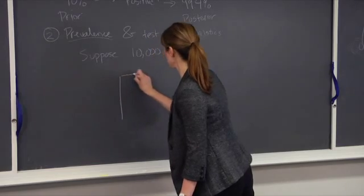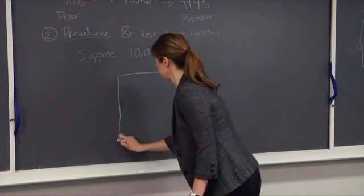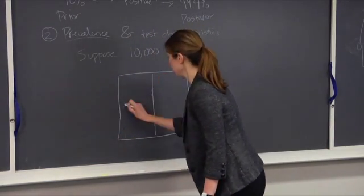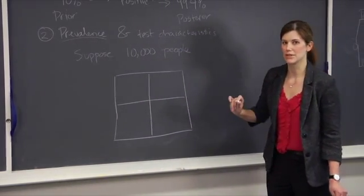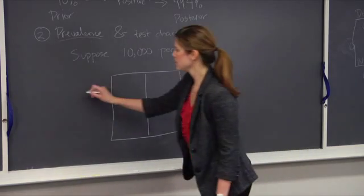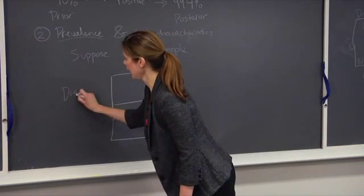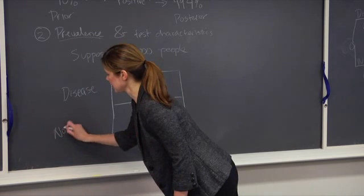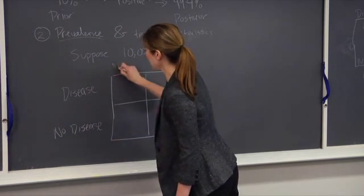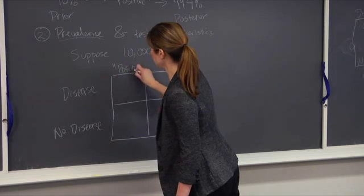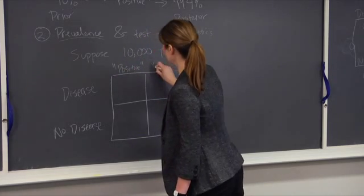So this 2x2 matrix will show that there are four possible buckets that these 10,000 people can fall into. So each person can either have the disease or not have the disease, and they can either have a positive test or a negative test.